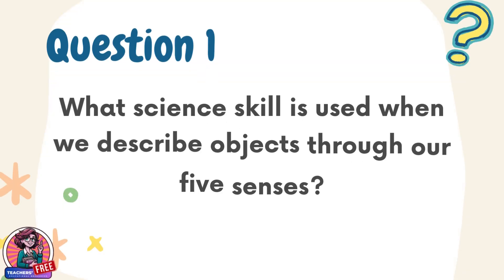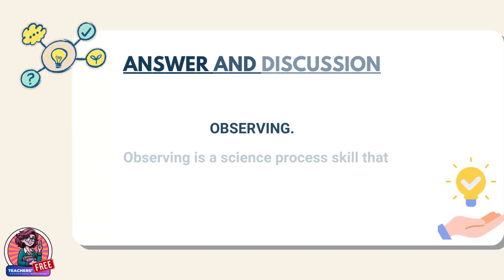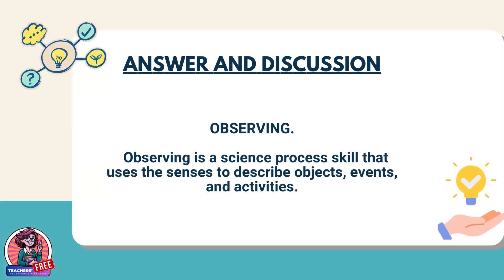Question 1. What science skill is used when we describe objects through our five senses? Answer: Observing. Observing is a science process skill that uses the senses to describe objects, events, and activities.